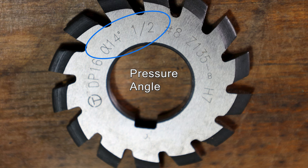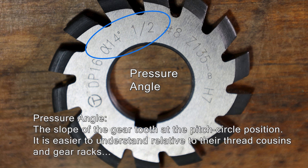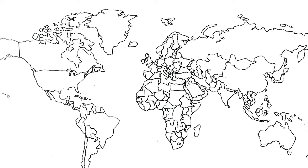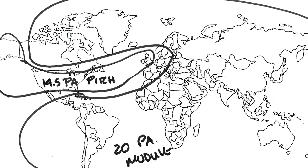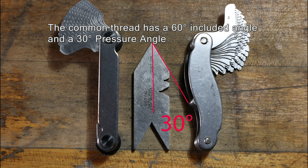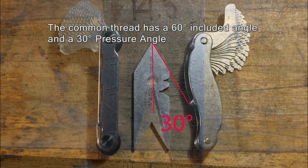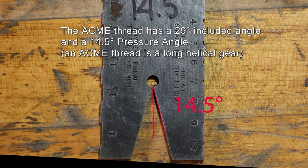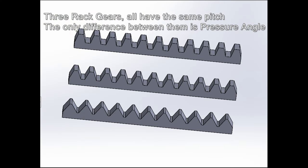Let's unpack the pressure angle. This cutter shows a 14 and a half degree pressure angle — that's the slope of the gear tooth at the pitch circle, which is the definition. In the beginning of gear making it was a basic global definition difference: most of this started in Europe with 20-degree pressure angle module gears for most of the world, while America and Great Britain were 14 and a half degree pitch. In gear terms, thread gauges have a 60-degree included angle — half of that, 30 degrees, is the pressure angle.